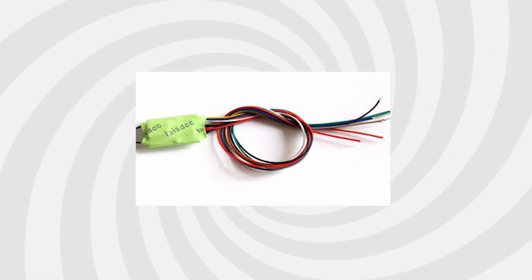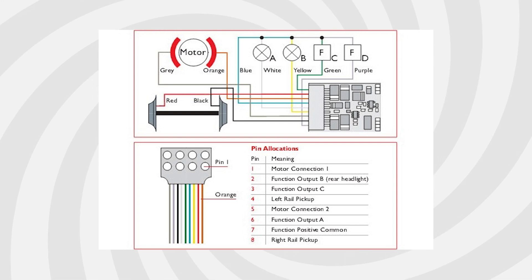Next, we can grab our DCC decoder. As you can see, this has a wonderful rainbow of wires. Please check your decoder's manual for more specific instructions, but most decoders will follow the same standards, where red and black are the rail pickups, and then orange and grey will again be for the motor. This makes our life easy, because it essentially means we will need to match red to red, black to black, orange to orange, and grey to grey or brown.